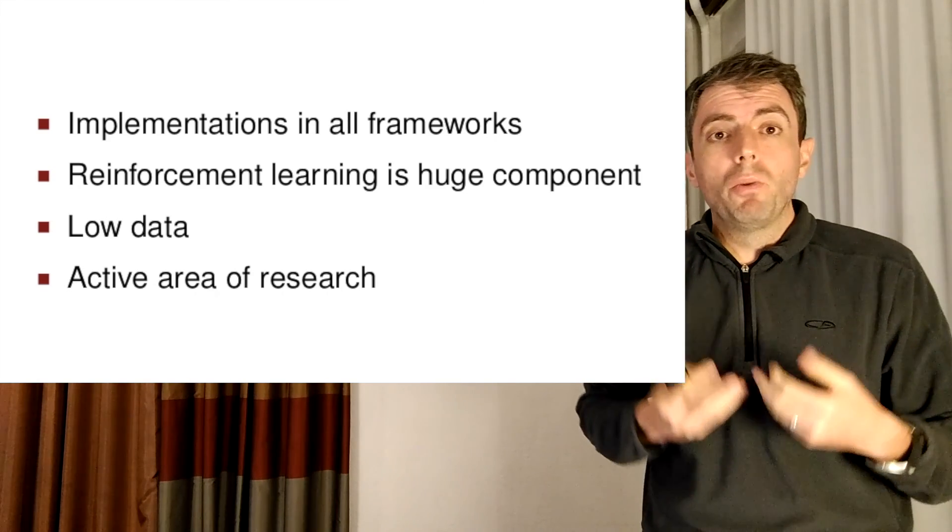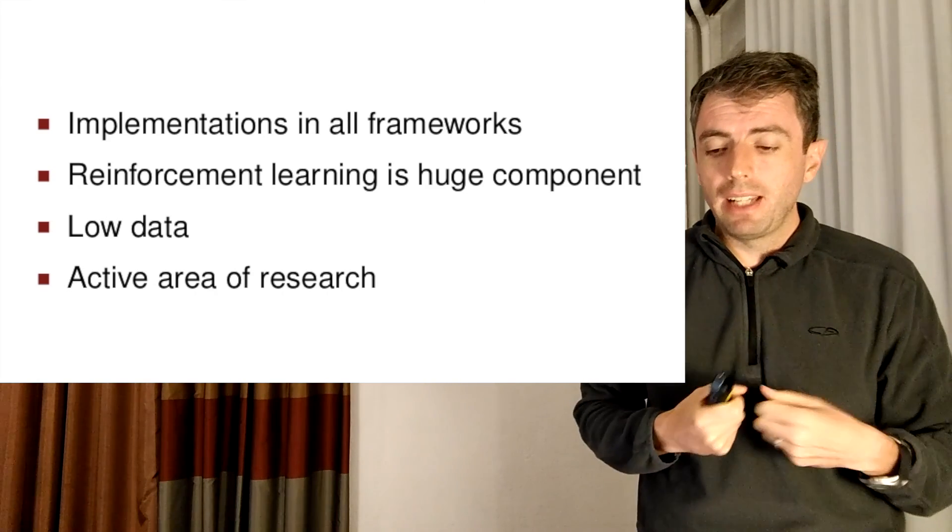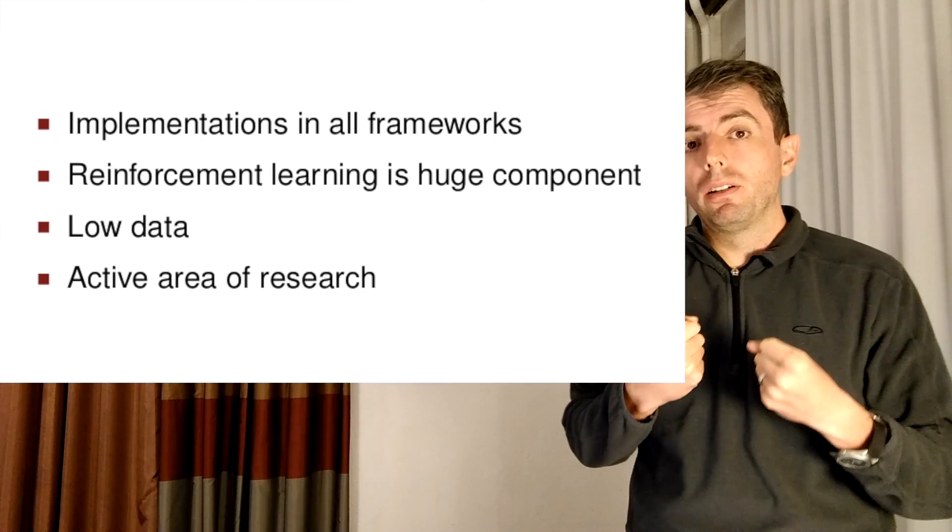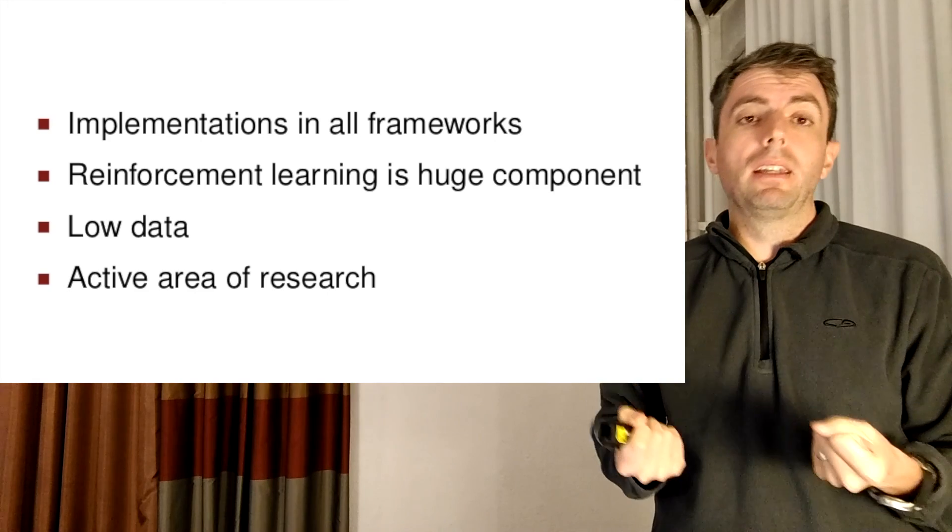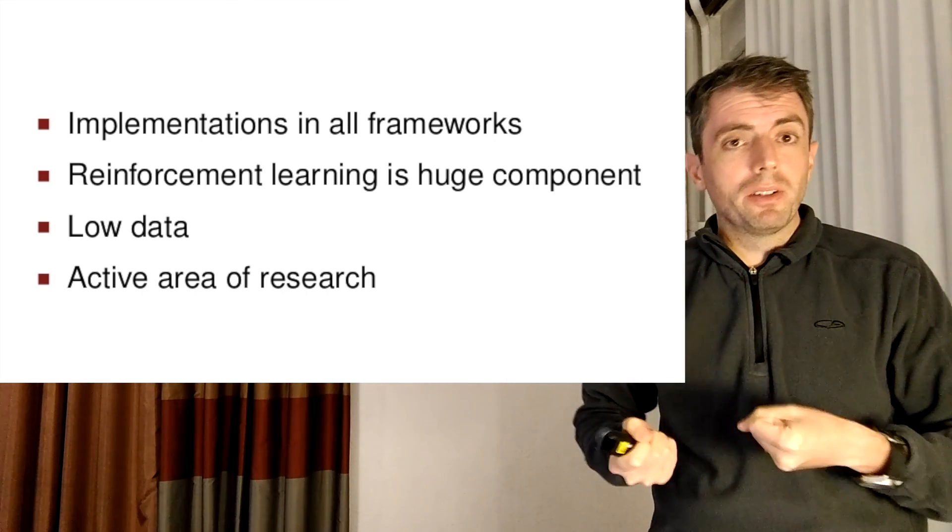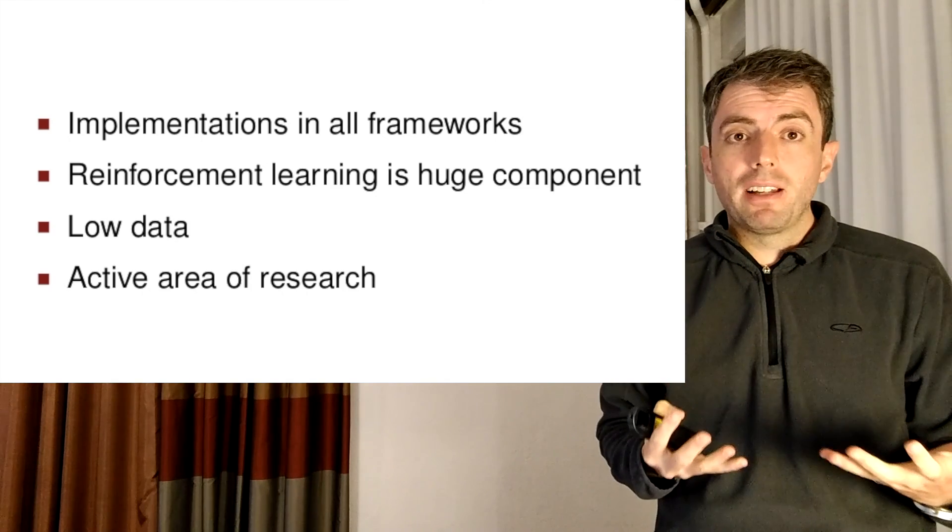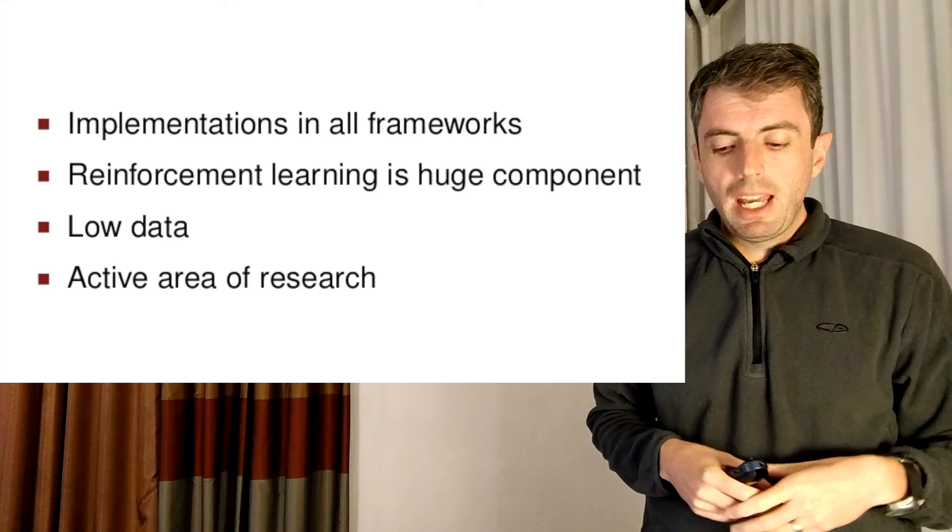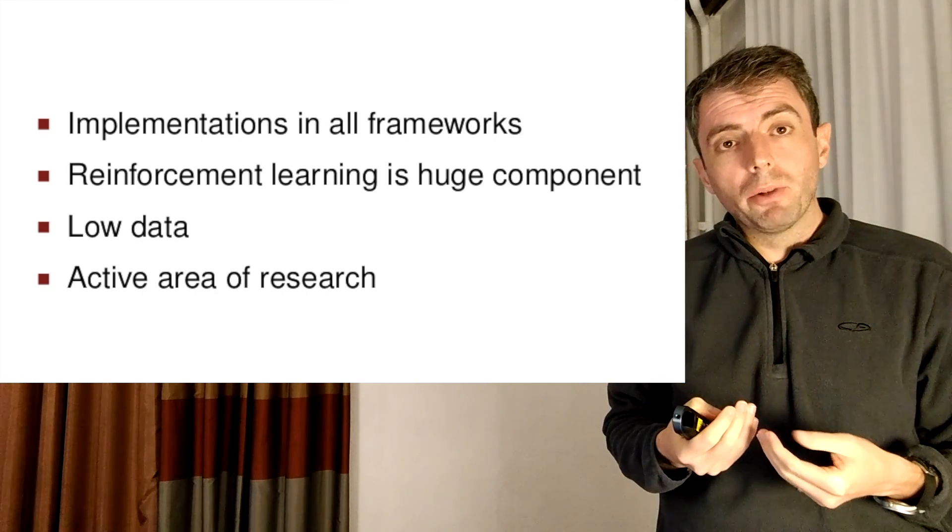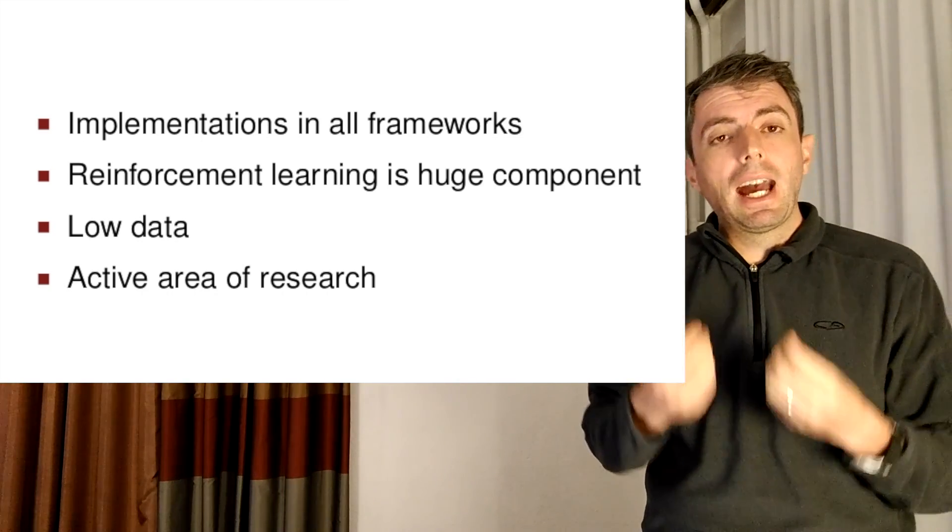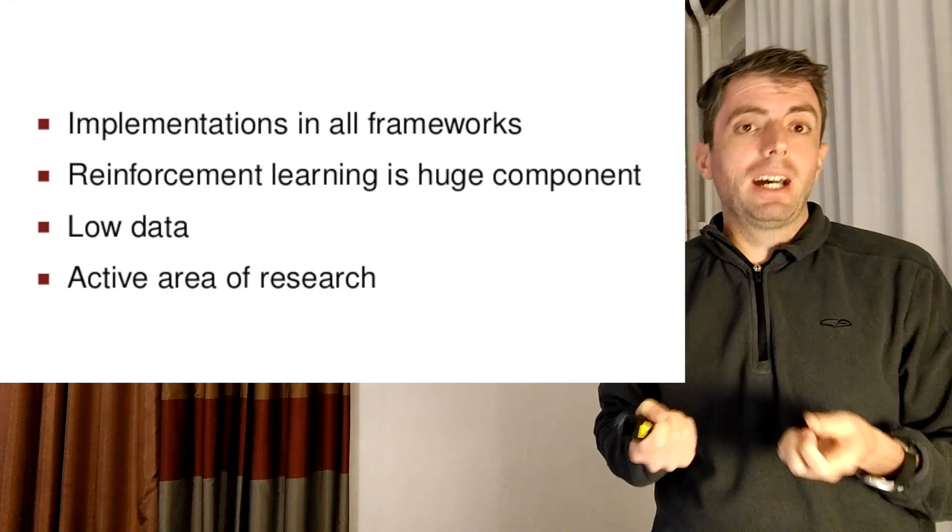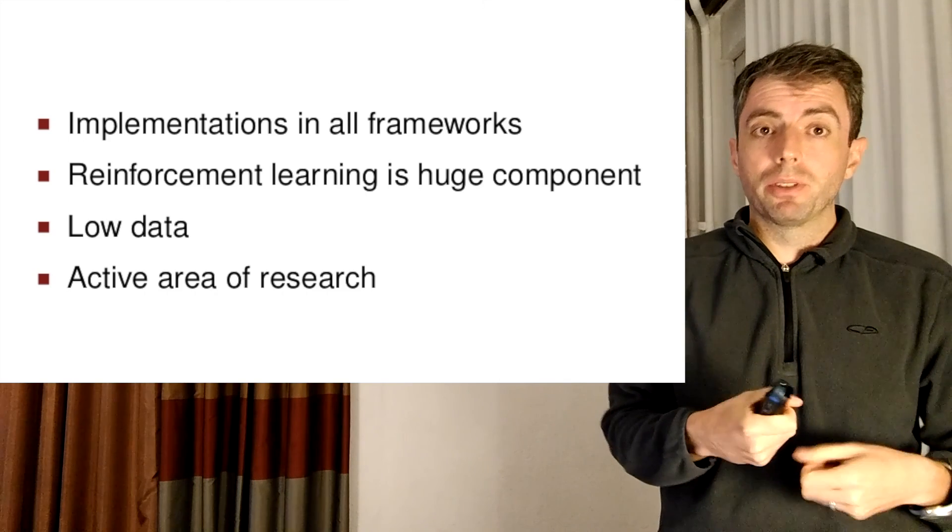This is an active area of research. You don't know what the right answer is. Things are in active development. And how do you deal with when you have low resources in a particular language? You want to translate from Uyghur to Yiddish. You don't have a lot of parallel text. How do you do that effectively? And this is an active area of research. Neural networks are very hungry for data. How do you compensate for that when you don't have as much data as you would have for say English and Chinese?